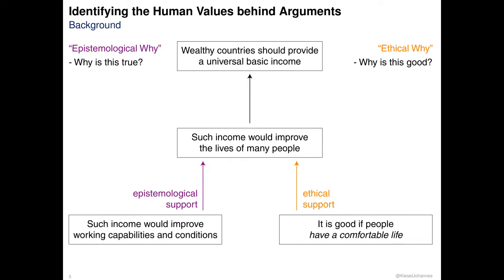However, this chain of reasoning misses its central point, something so natural to us that we often do not bother explicating it, if we even consciously think about it. But for a machine, this is far from obvious. Why would we want the lives of many people to improve? Consider for a moment you would not know — this whole argument would not make sense at all. But fortunately, we know that it is good to improve the lives of people because, for example, we have accepted that it is good if people have a comfortable life.